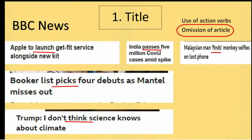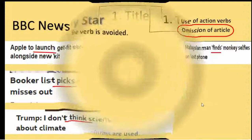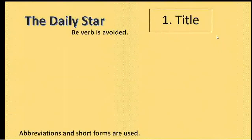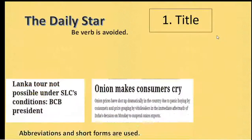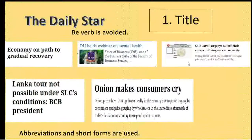Loans, buses, finds, pigs, things — all these are action verbs. Next, in the titles, be-verbs are avoided.